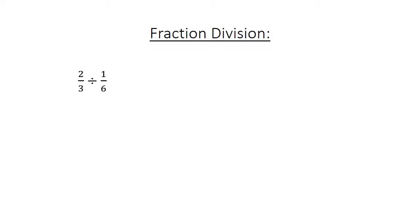Fraction division: 2 over 3 divided by 1 over 6. We flip and multiply: 2 over 3 times 6 over 1 equals 12 over 3, which equals 4.